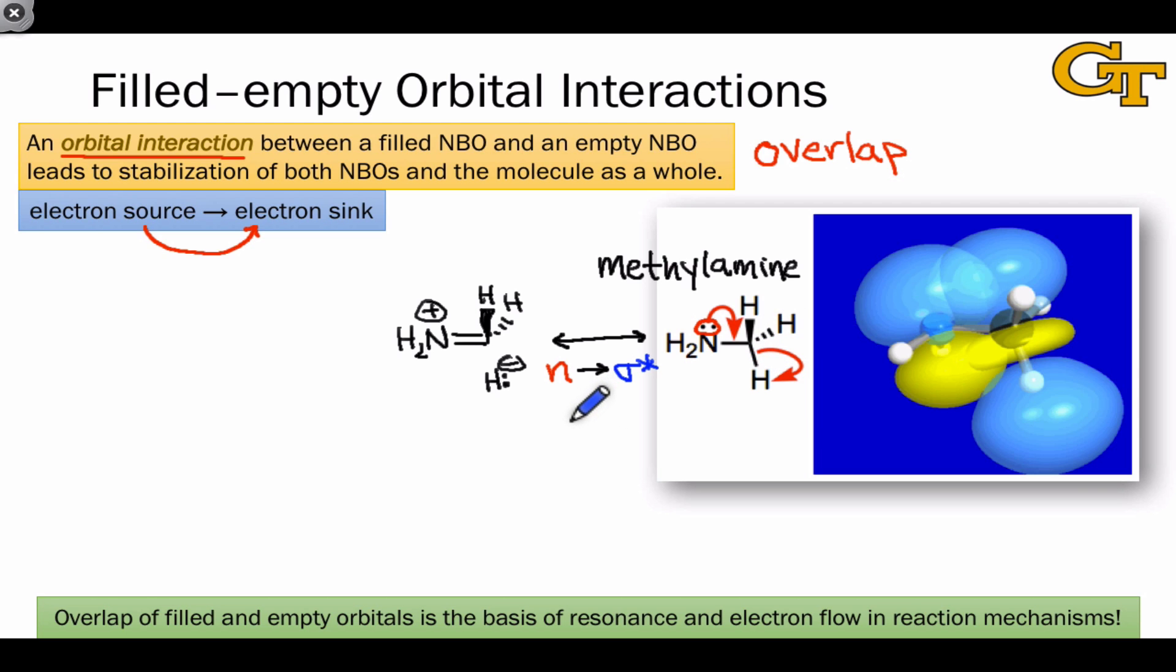These labels, hopefully by now, are very suggestive, and as you may have guessed, the labels indicate natural bond orbitals involved in an orbital interaction that corresponds to this electron flow. Curved arrows have physical meaning, and the physical meaning they have is related to these orbital interactions.